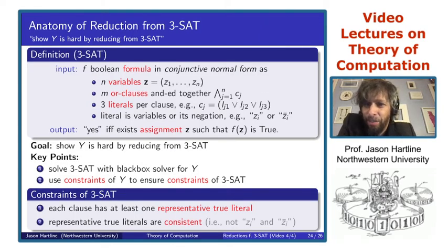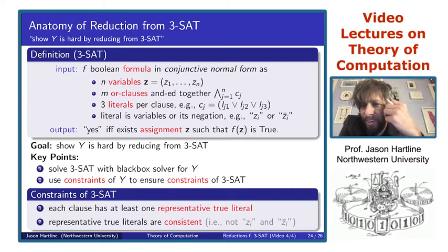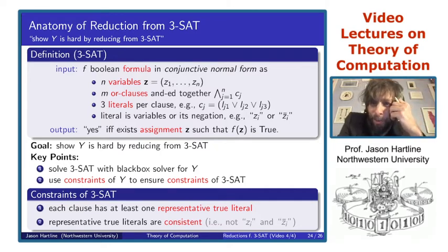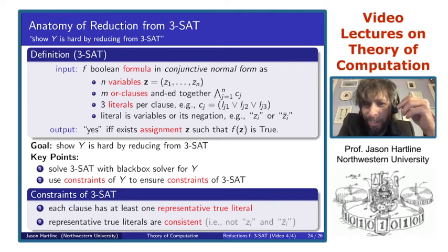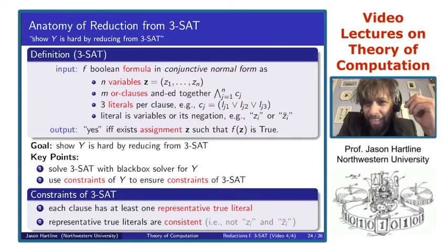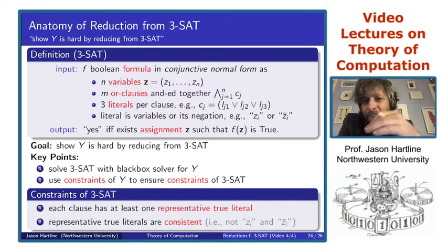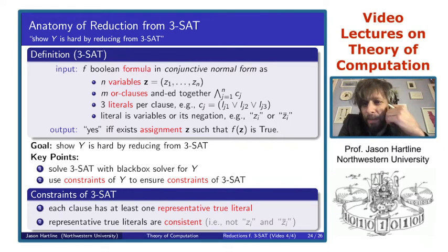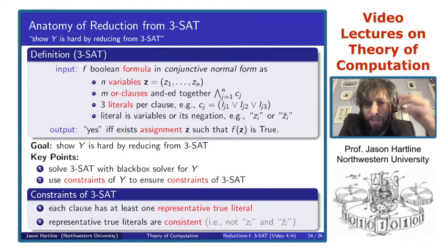As a reminder, this is how 3SAT reductions go. If a 3SAT problem is given by a formula that's in conjunctive normal form — n variables, m clauses — these are OR clauses. Each clause has three literals. These literals are OR'd together, and all the clauses are AND'd together. We want to answer yes if there's an assignment to the variables that makes this formula true.